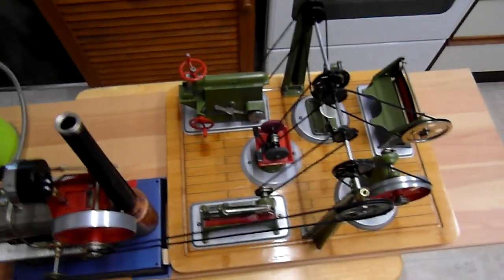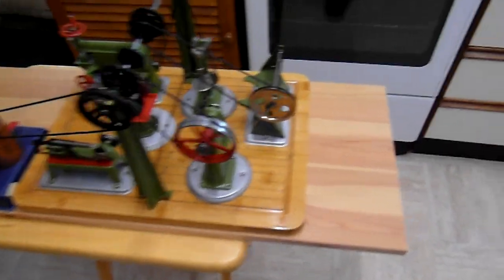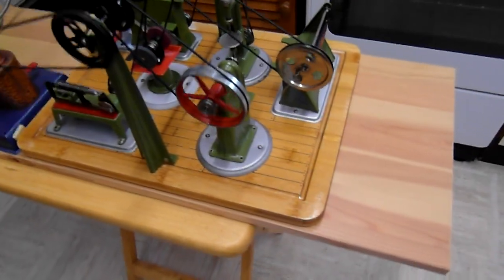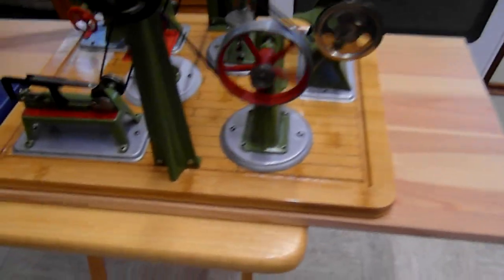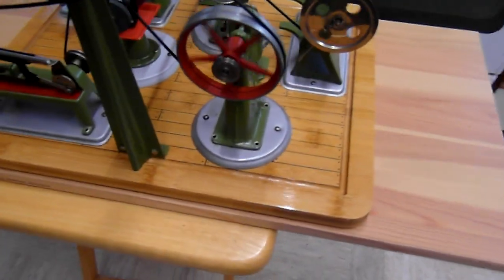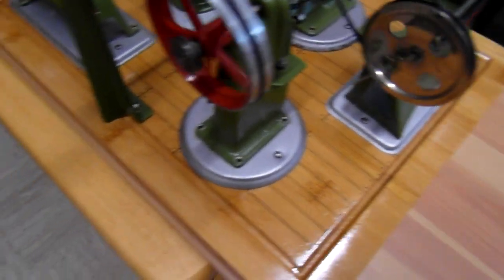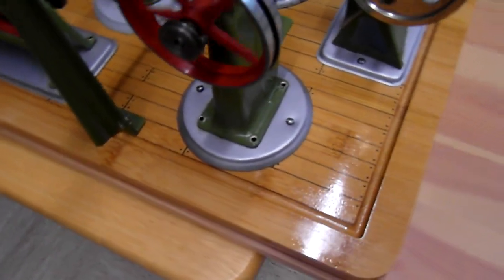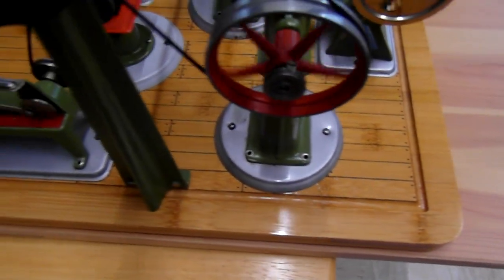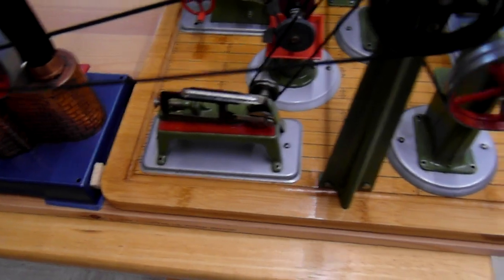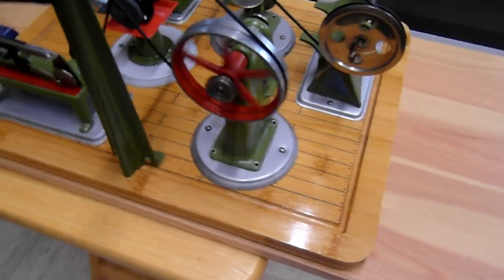Oh, I forgot to mention the base for the workshop. It's just one of those cheap chopping board things, bamboo. And all I've done with that is just marked out some dummy floorboards with a fine liner and put a yacht varnish. I'm quite pleased with that.